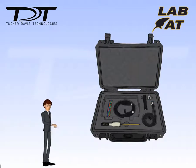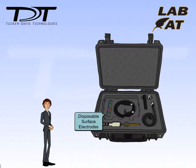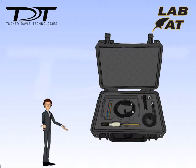Now remove the LabRat interface to reveal the USB Type-C cable and Type-A adapter. Also stored in this area are some disposable surface electrodes that we will be using in this demonstration.